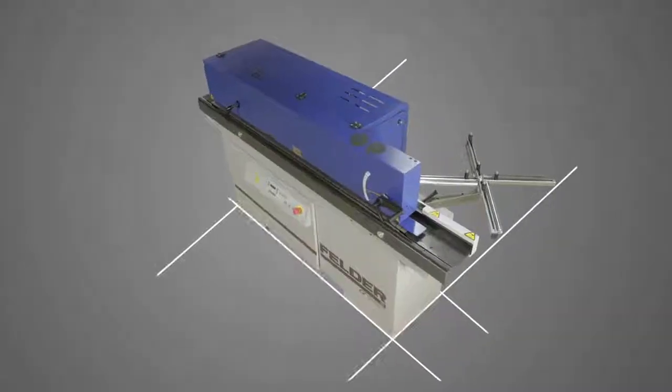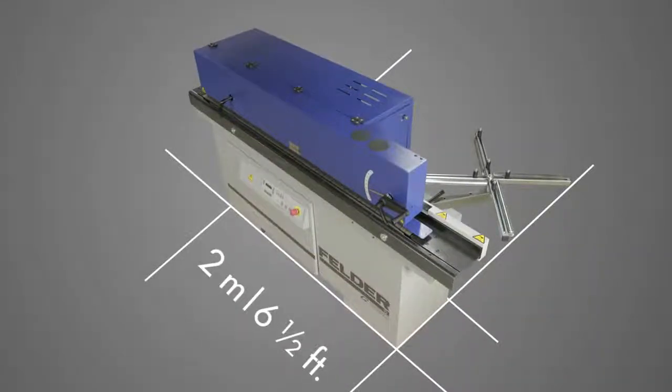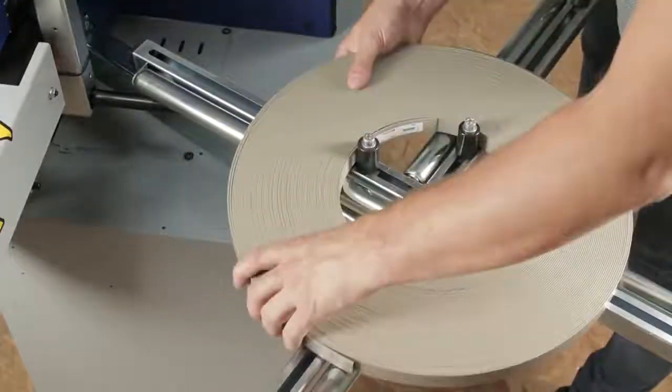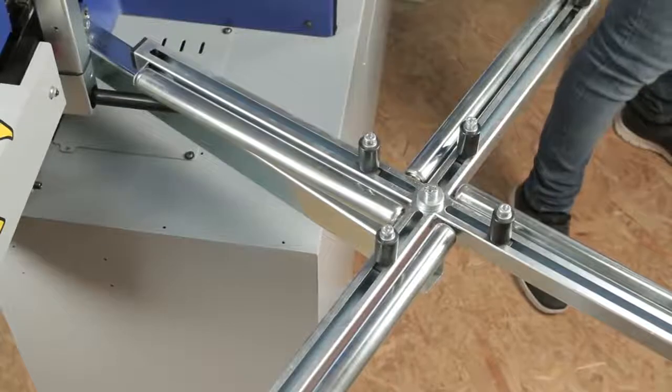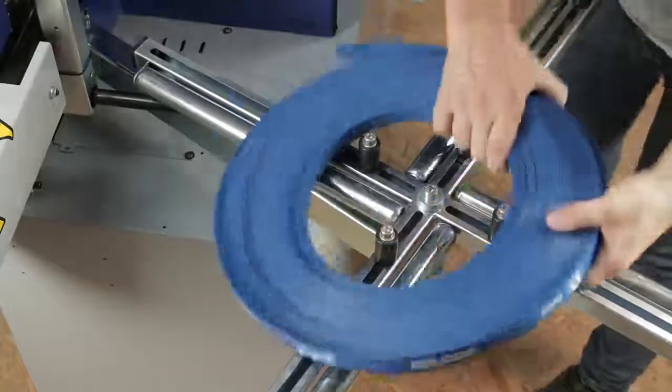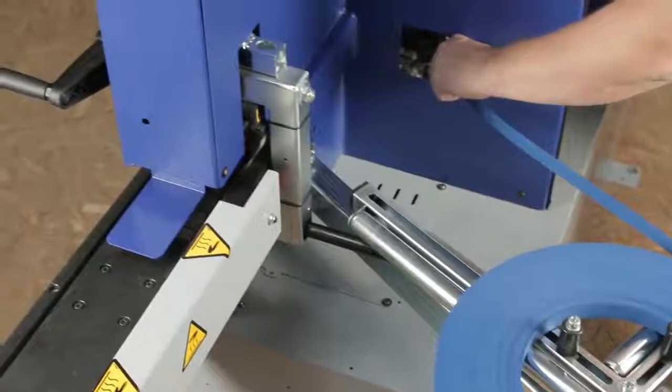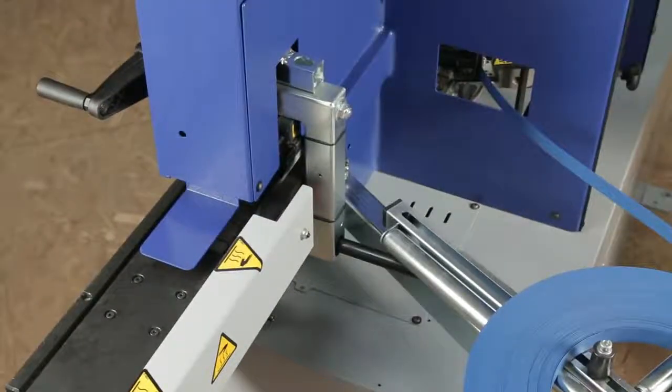With its length of only two meters, six and a half feet, the G330 fits into any workshop. It can handle coiled material from 0.4 to 3 millimeters, 1/64th inch to 1/8th inch, and panels between 10 and 45 millimeters, 3/8ths inch and 1 and 3/4ths inch in height.